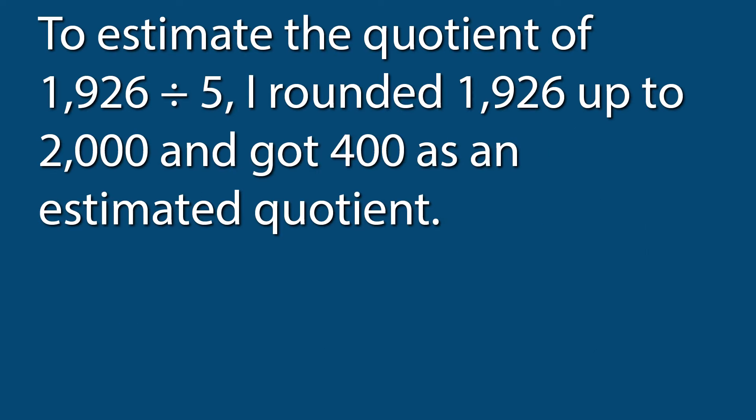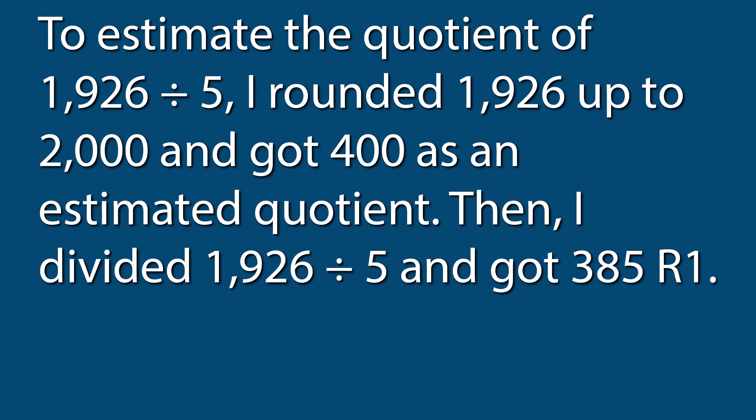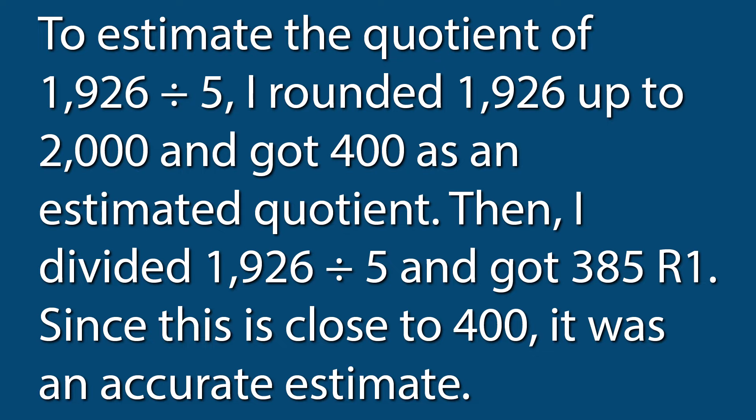To answer the question, we could write: to estimate the quotient of 1,926 divided by 5, I rounded 1,926 up to 2,000 and got 400 as an estimated quotient. Then I divided 1,926 by 5 and got 385 remainder 1. Since this is close to 400, it was an accurate estimate.